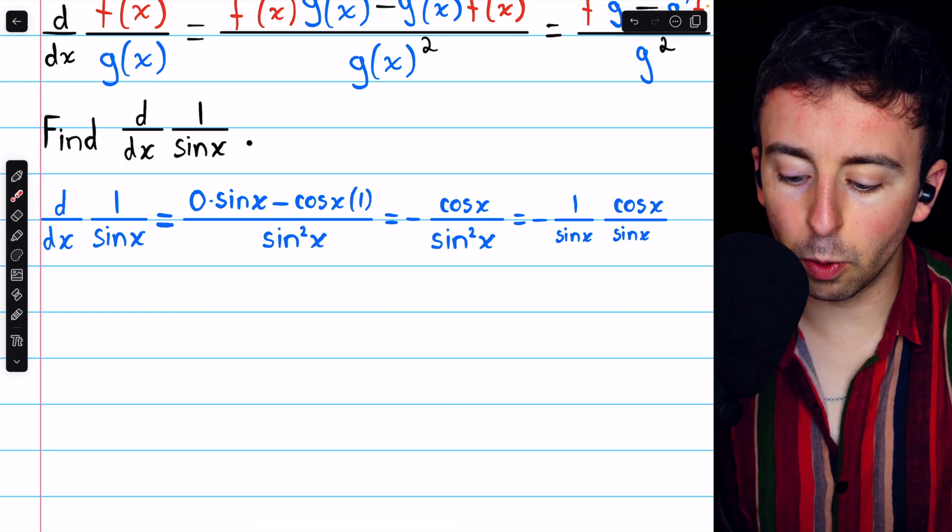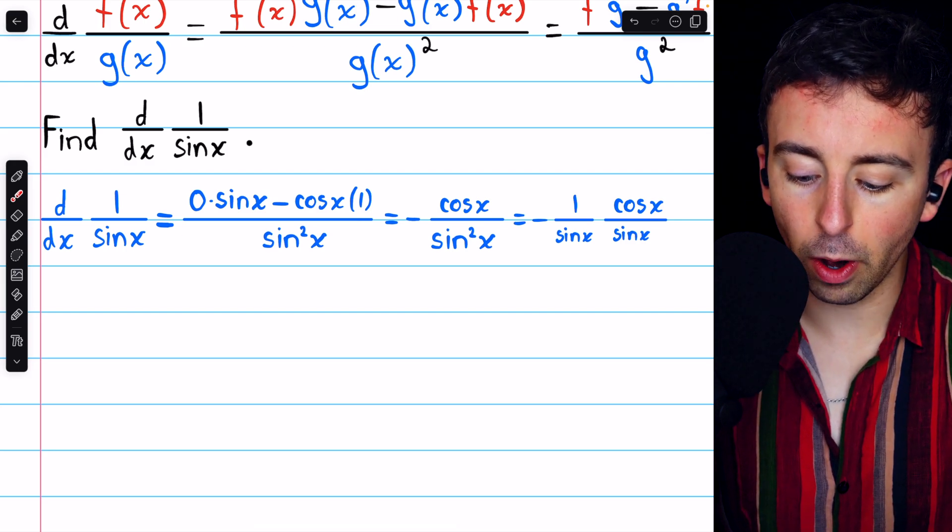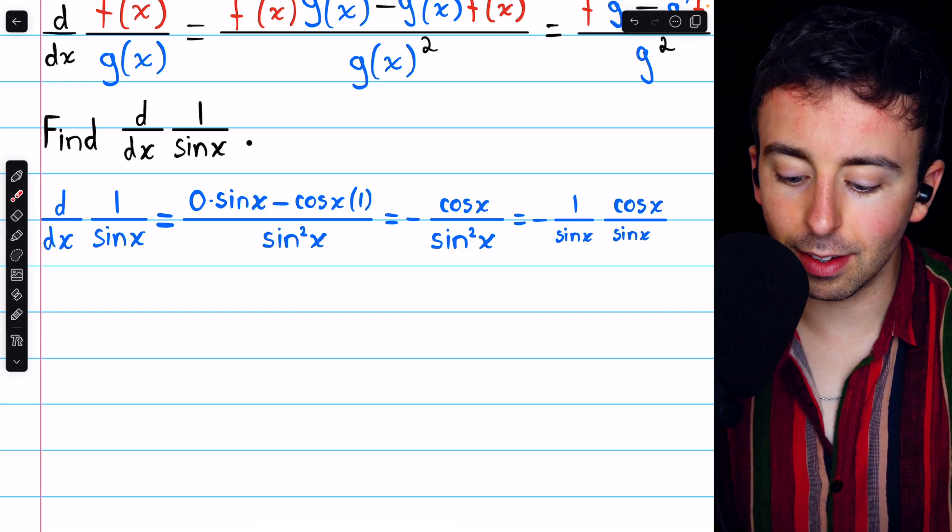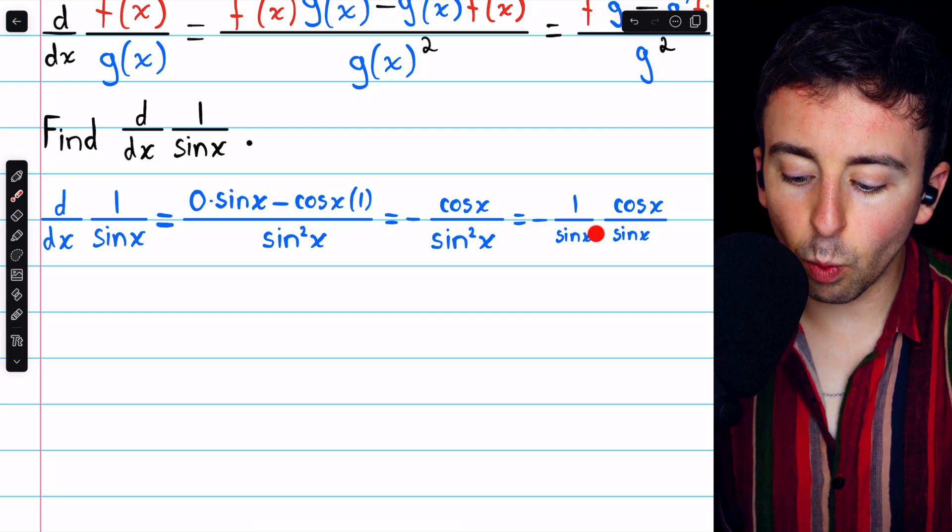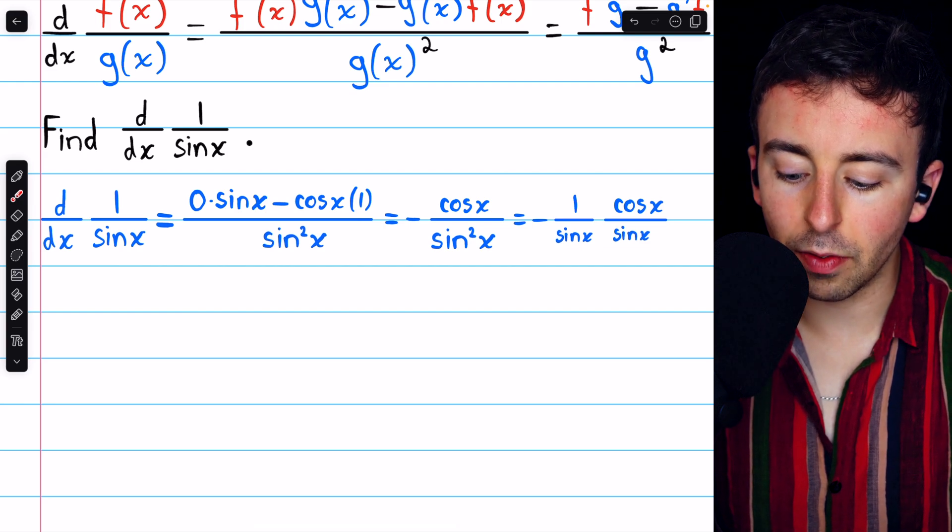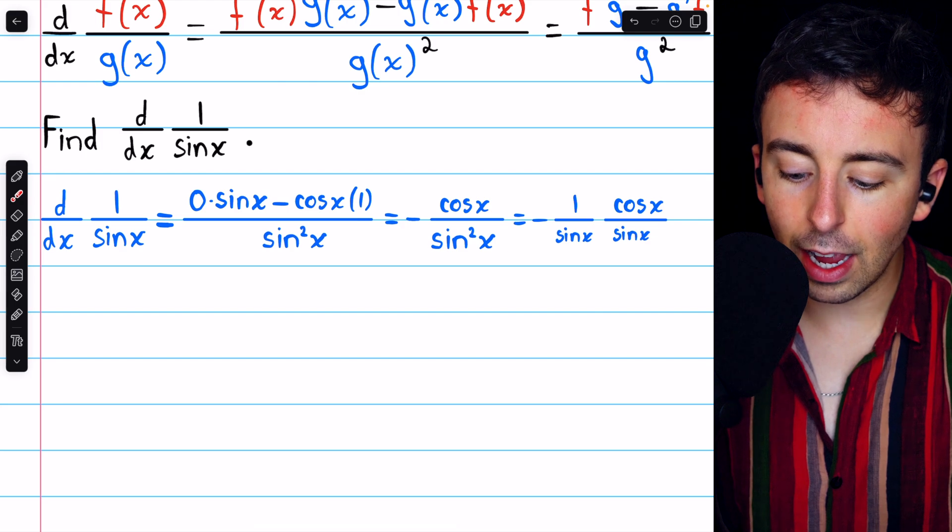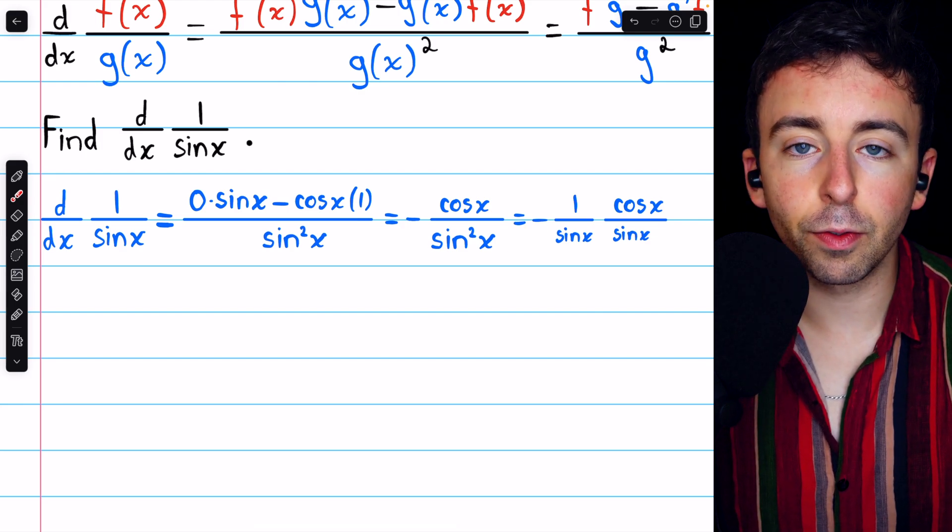Then we can split this up in order to rewrite it just a little bit more. In the denominator, we have two factors of sine x because it's sine squared. So we're going to take one of those out all by itself. We have a 1 over sine x. That leaves cosine x over sine x, and we also still have that negative in the front.